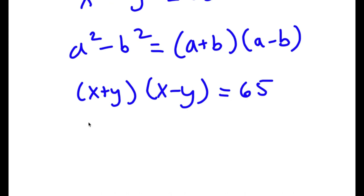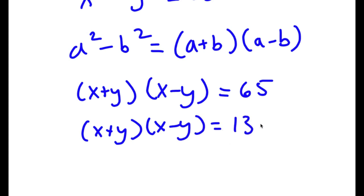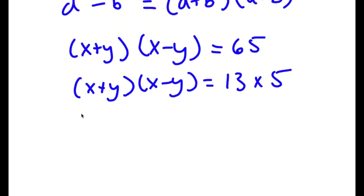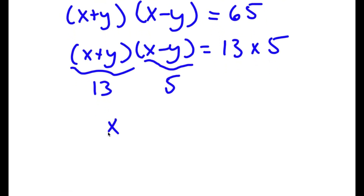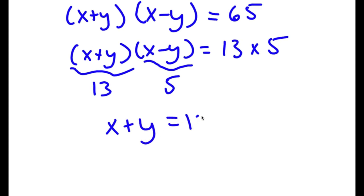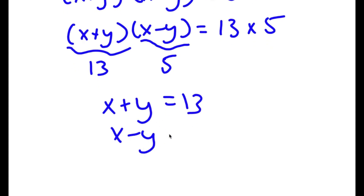Now 65 is equal to 13 times 5. So because we have x plus y times x minus y equal to 13 times 5, we can say x plus y equals 13 and x minus y equals 5.